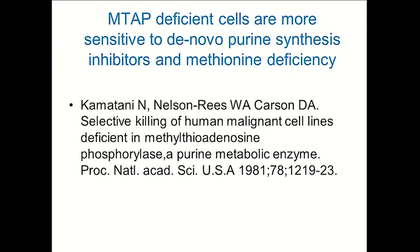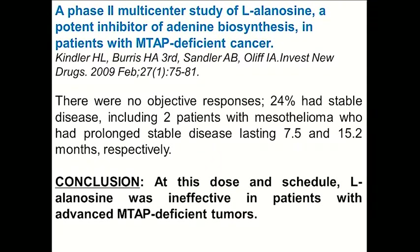Back in 1981, Dennis Carson published a paper in PNAS showing that MTAP-deficient cells are more sensitive to de novo purine synthesis inhibition and methionine deficiency. That observation has been reproduced many times in different laboratories including our own. Yet there was only one clinical study in which patients with solid tumors were treated with L-Alanosine, an inhibitor of IMP to AMP biosynthesis, in patients who had specifically MTAP-deficient cancer.